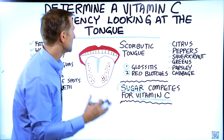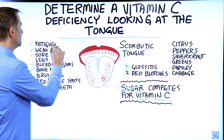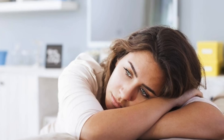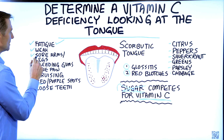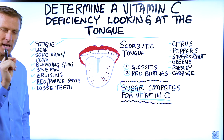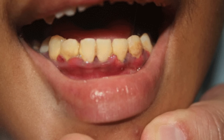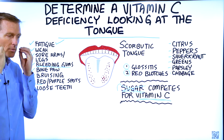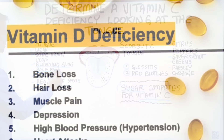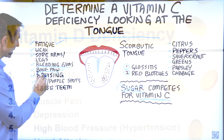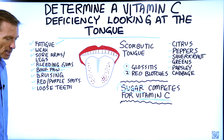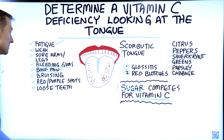There are many other symptoms of a vitamin C deficiency. Fatigue is probably going to be the first one you experience — lethargy, weakness, tiredness. You may develop sore arms or legs. You might brush your teeth and notice bleeding gums, because of the connective tissue and collagen around the vascular part of your gums. You can also experience bone pain, which you can also see with a vitamin D deficiency. Bruising from the vascular system, and red and purple spots — a lot of times you'll see them in the lower legs, especially in a diabetic.